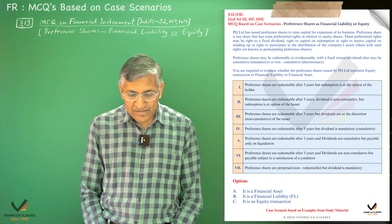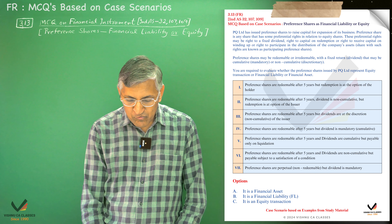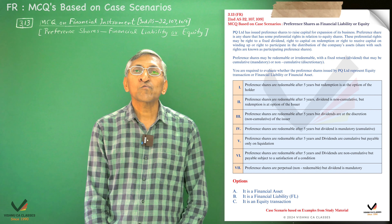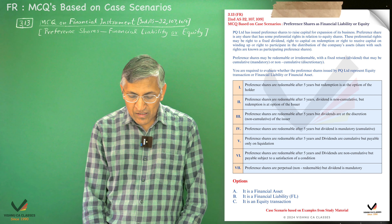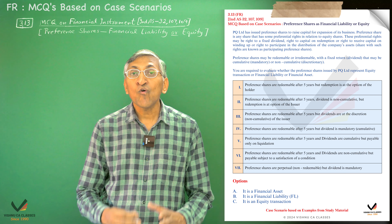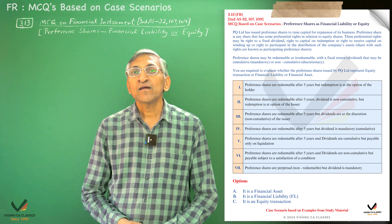Case Number 1: Preference shares are redeemable after five years, but redemption is at the option of the holder.